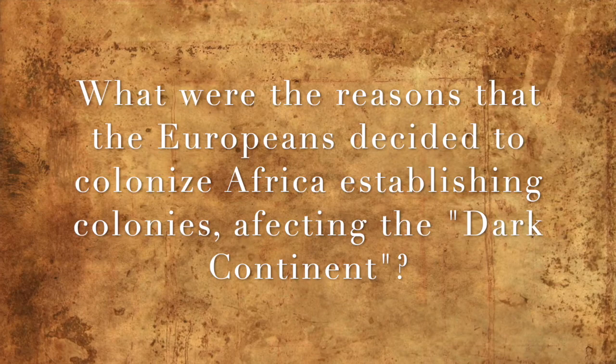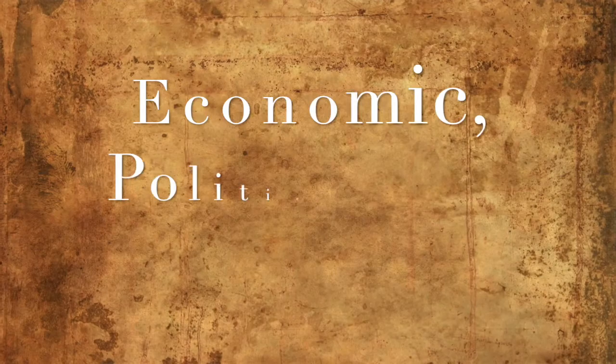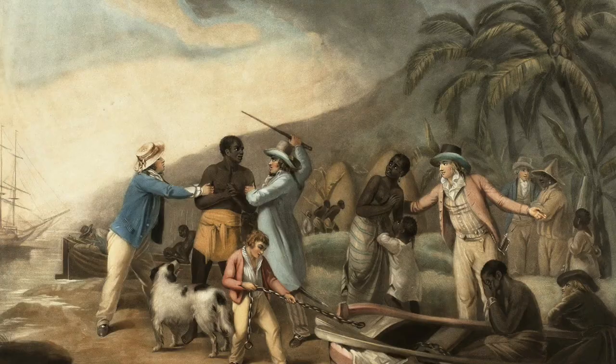What were the reasons that the Europeans decided to colonize Africa, establishing colonies affecting the Dark Continent? The Scramble was motivated by three factors: economic, political, and social.